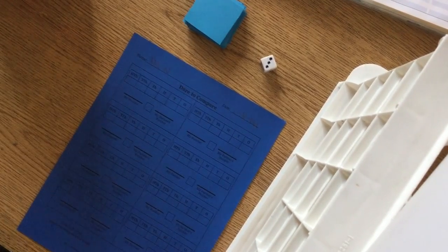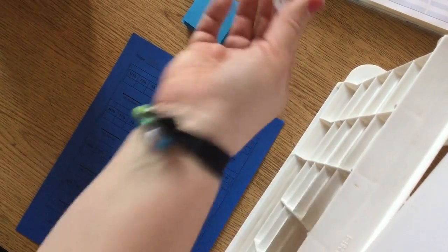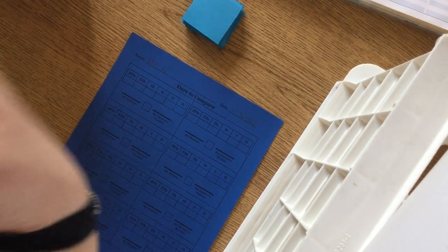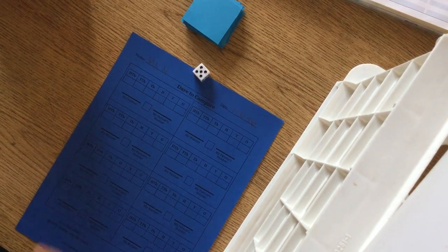Alright, so the first thing you need to do is one of you needs to roll the dice. It doesn't really matter who rolls, you can take turns who does it first. So I got a 5.